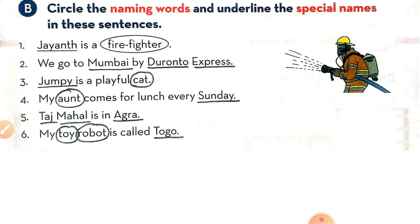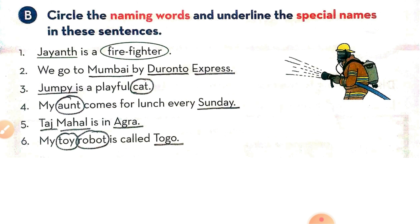Fifth sentence: 'Taj Mahal is in Agra.' Taj Mahal is a special name, and Agra is also a special name. Sixth sentence: 'My toy robot is called Togo.' Toy and robot are naming words, and Togo is the special name.